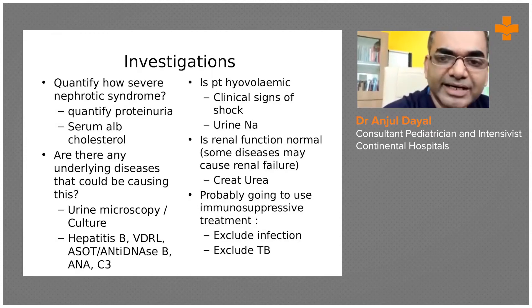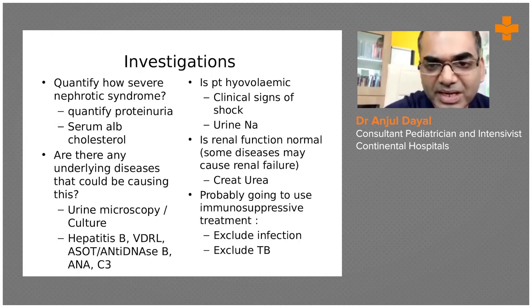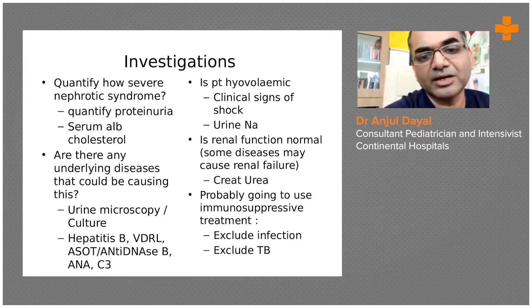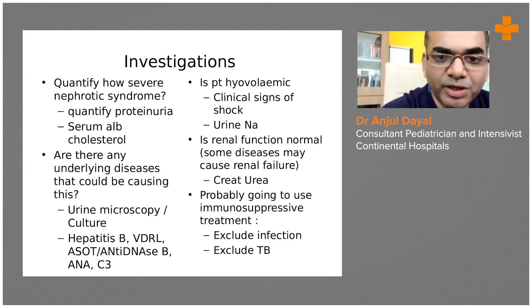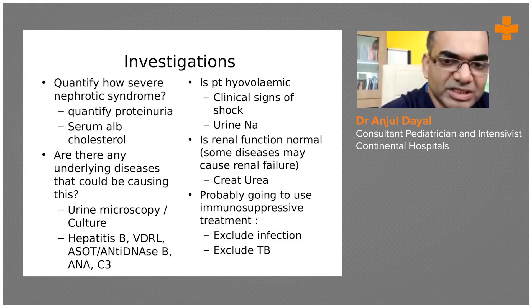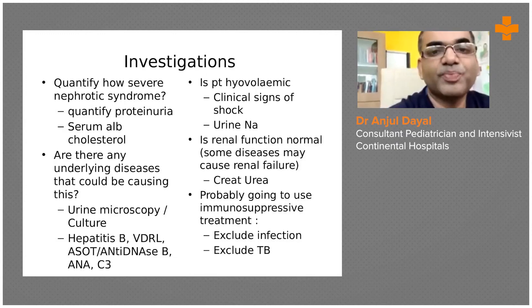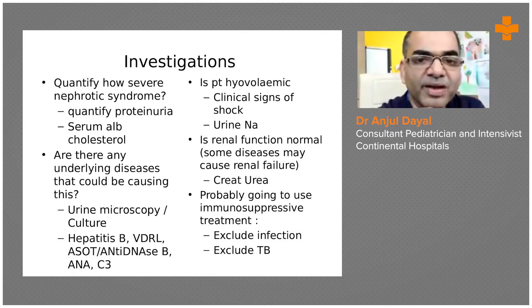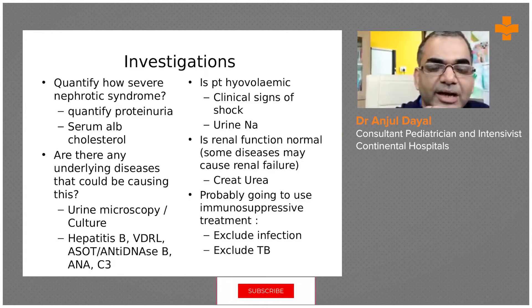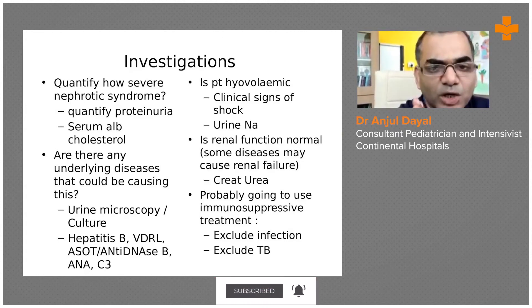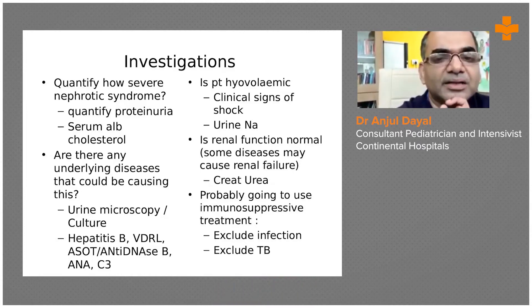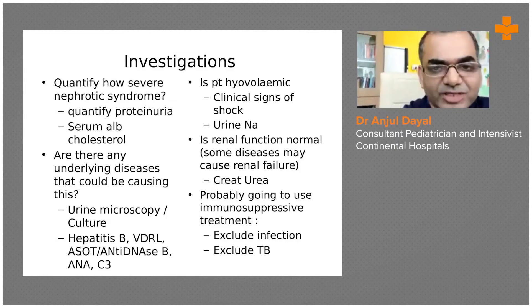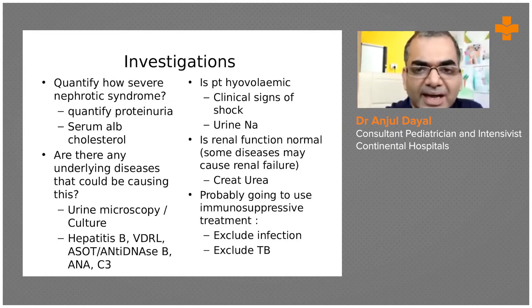We also do tests to rule out hepatitis B, hepatitis C, VDRL. We look at ASO titers and anti-DNA to rule out autoimmune diseases. These investigations are done when the picture is not consistent with minimal change disease. If the child is between 1 to 10 years, has only gross proteinuria, no hematuria, normal blood pressure, and normal complement level, then we do not need all these investigations to prove secondary causes.